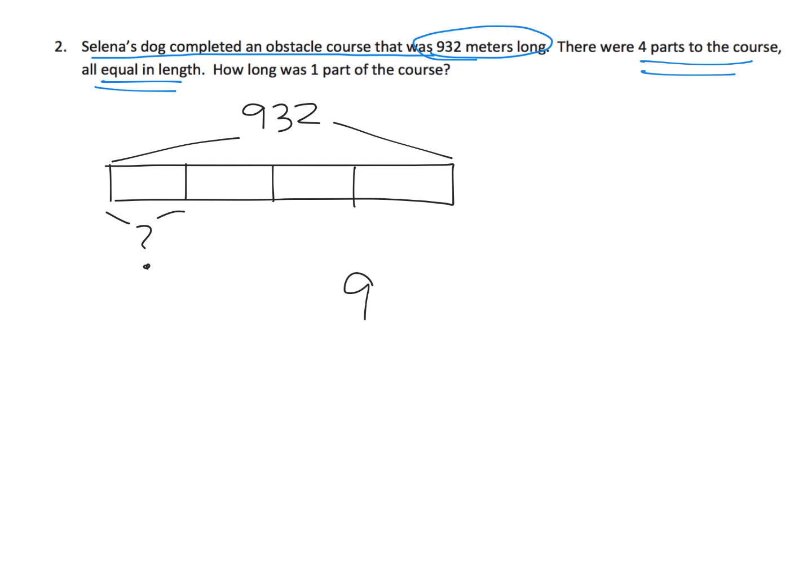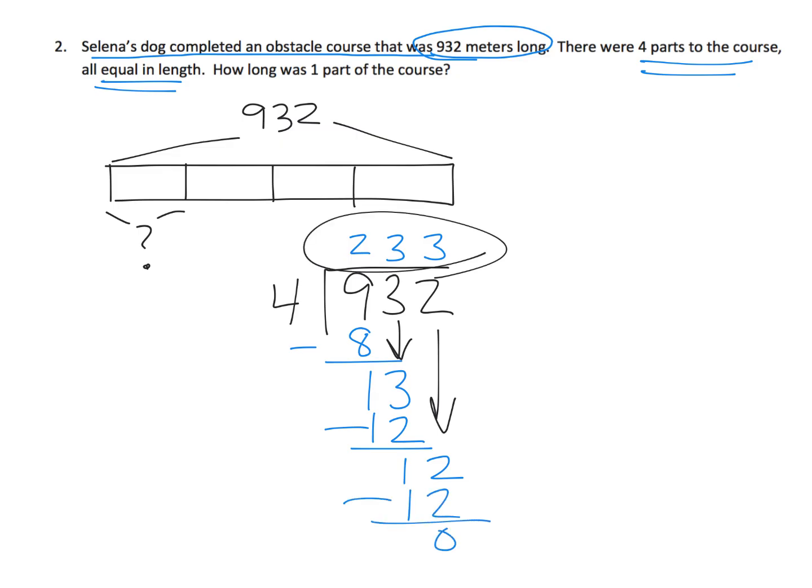So of course that means division, not much of a surprise being a division worksheet or a division lesson, but we're going to do 932 divided by 4, and I'm going to do this fairly quickly because at this point, I think our students are going to be getting it. So we have 13 tens divided by 4 gives us 3 tens with 1 ten left over, and now we have 12 ones left over, and so that's 12 ones divided by 4 is 3, and we have no ones left over. So the answer is 233, so each section of that course was 233 meters.